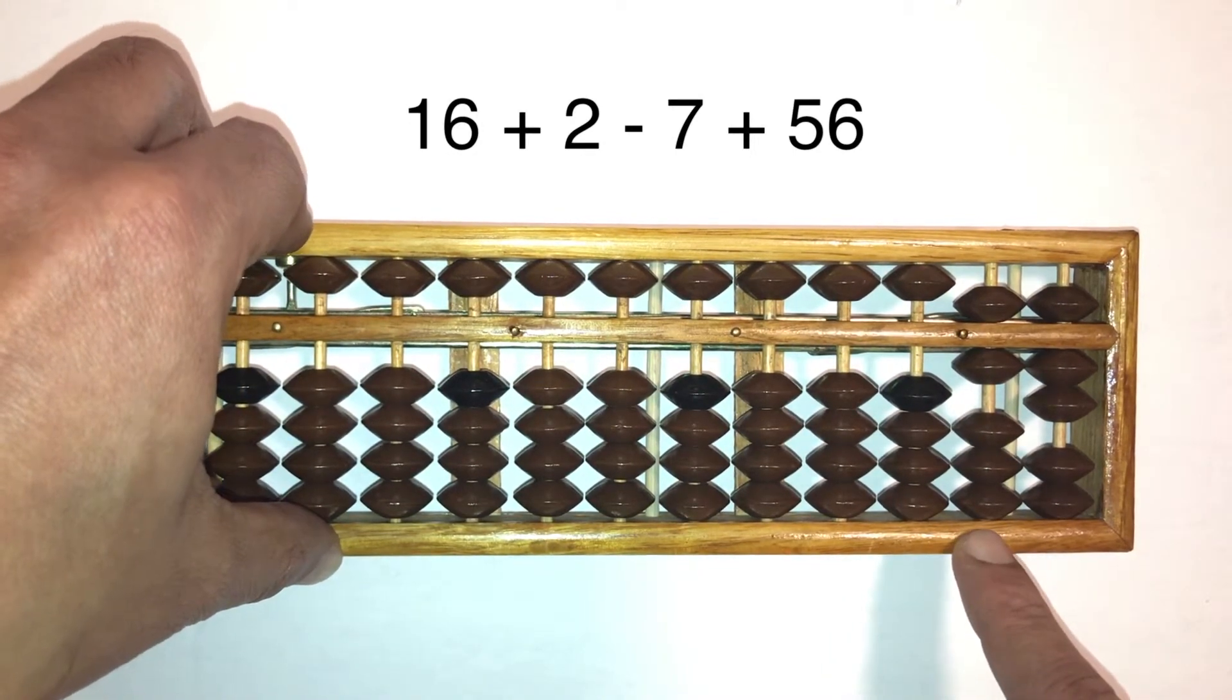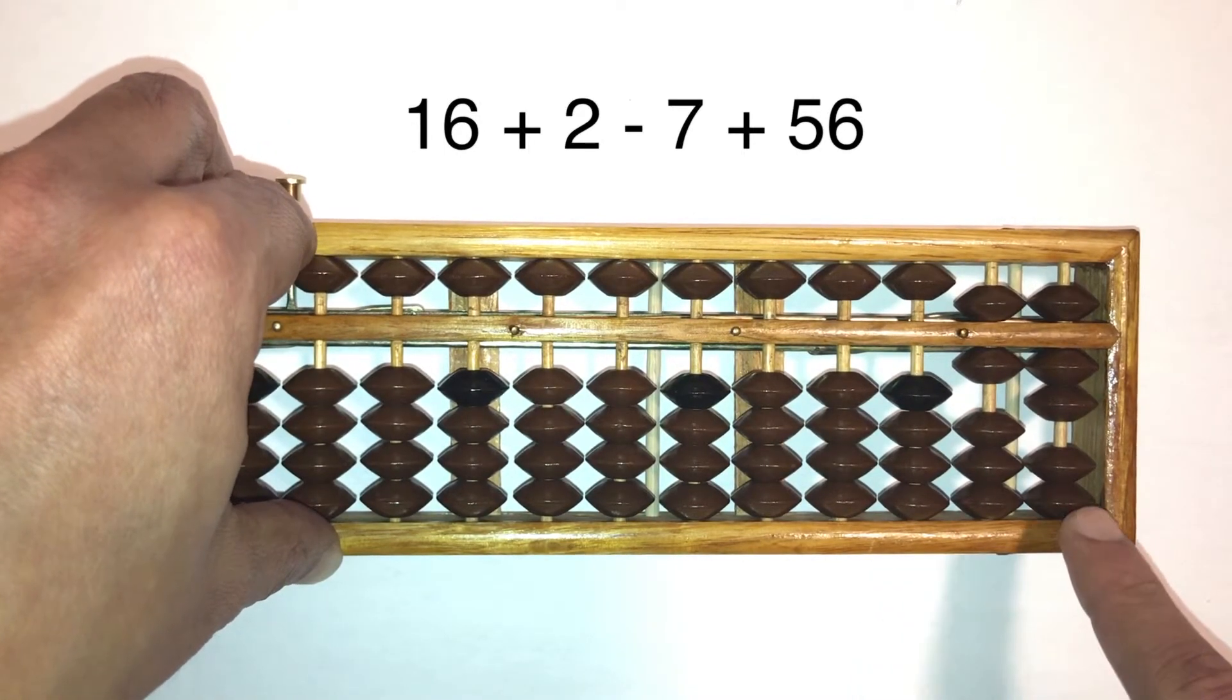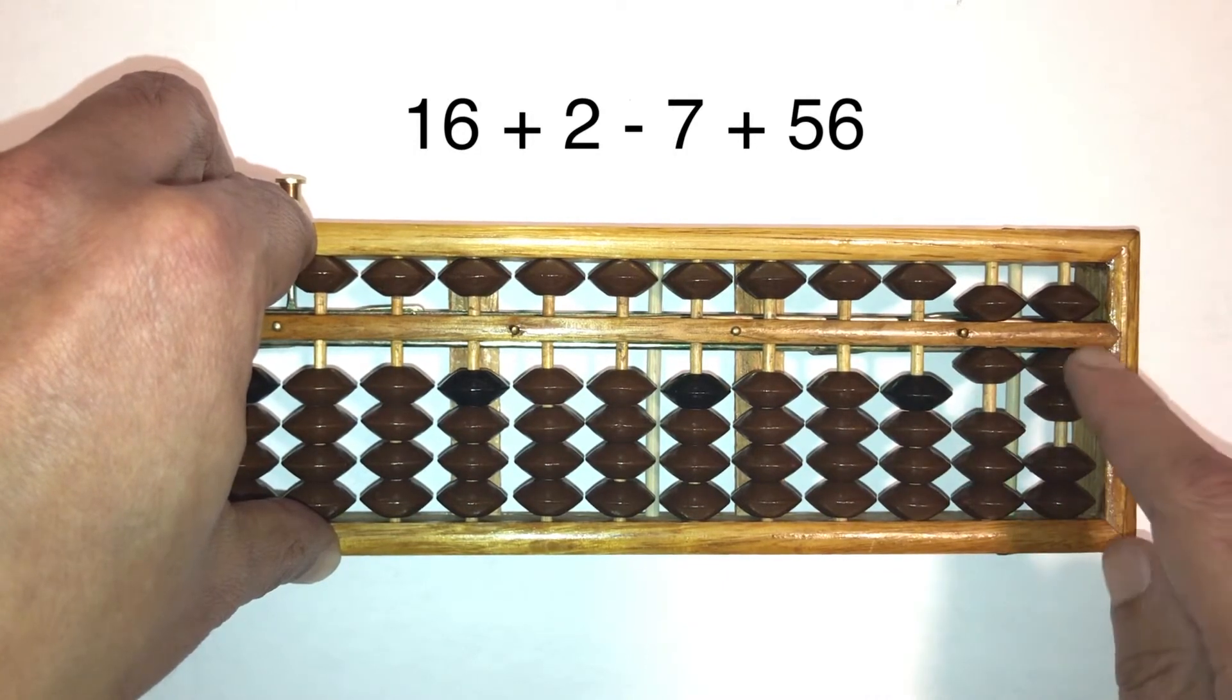What's your answer? Now we have 6 in the tens column, makes it 60, and 7 in the ones column makes it 7. 67. That's your answer. Let's do this again.